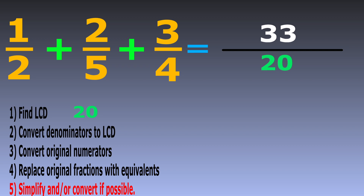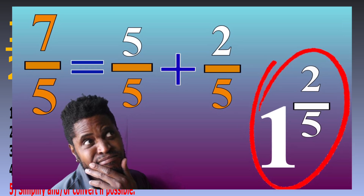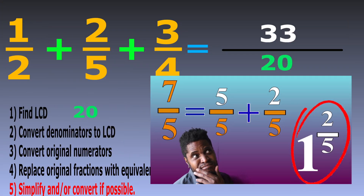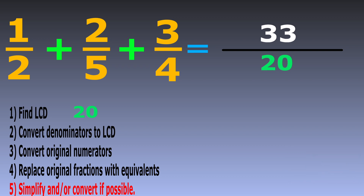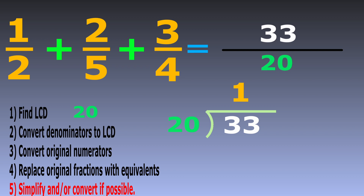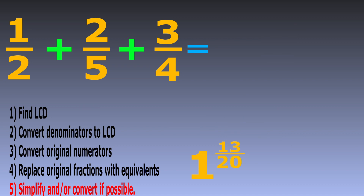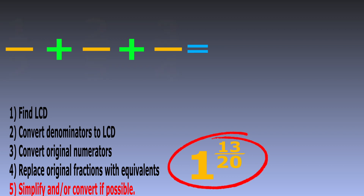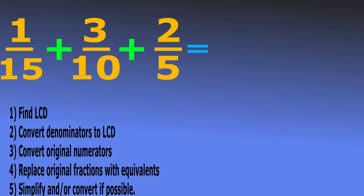Looking at 33 over 20 as a division problem: 33 divided by 20 — 20 goes into 33 once with 13 left over — so we can rewrite this as 1 and 13 over 20. That's the answer to the first question: 1 over 2 plus 2 over 5 plus 3 over 4 equals 1 and 13 over 20. Now let's do another example: 1 over 15 plus 3 over 10 plus 2 over 5.